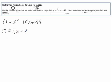It's going to be (x - 7) times (x - 7). And what we get here is x equals 7. So, our x-intercept is going to be (7, 0).